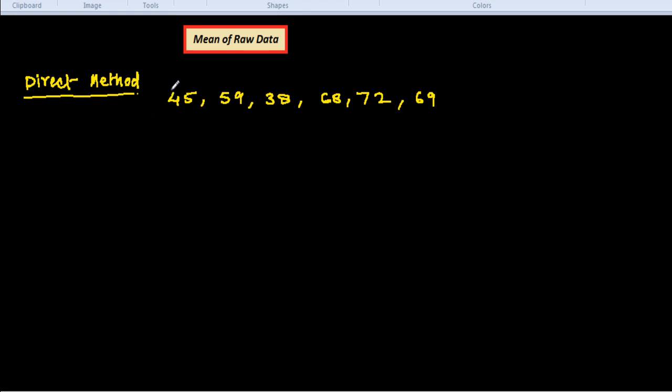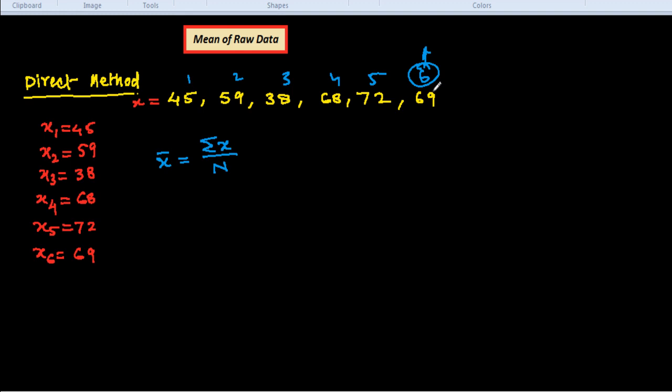So we see how we get the mean of this data. These terms are called x. The terms are denoted by x, so we can say that x1 = 45, x2 = 59, x3 = 38, x4 = 68, x5 = 72, and x6 = 69. Now we have to find out the mean, so mean we denote by x̄. x̄ = Σx/N. N is the total number of terms here: 1, 2, 3, 4, 5, 6, so N = 6.